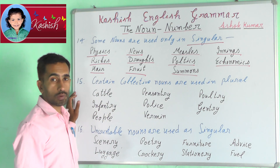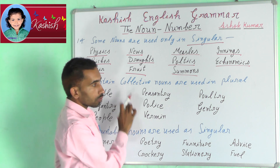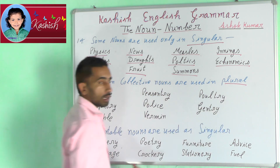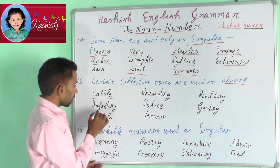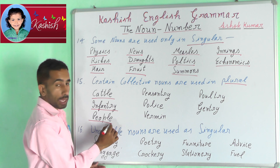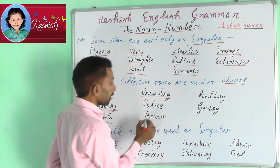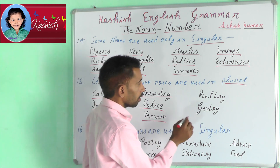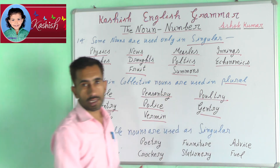Fifteenth rule: certain collective nouns are used in plural. For example: cattle, infantry, people, peasantry, police, vermin, poultry, gentry.